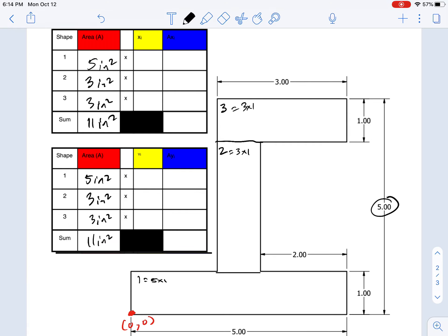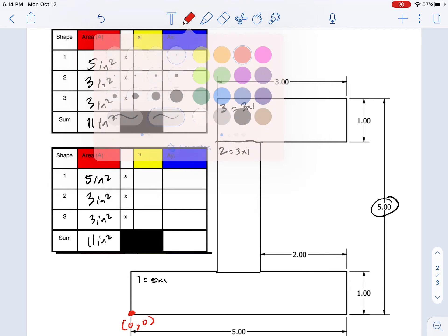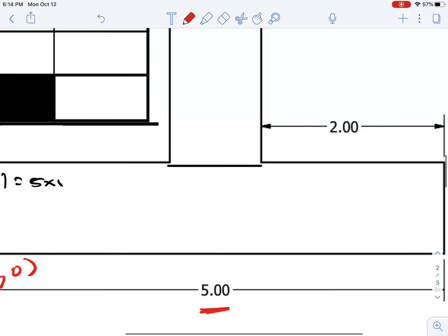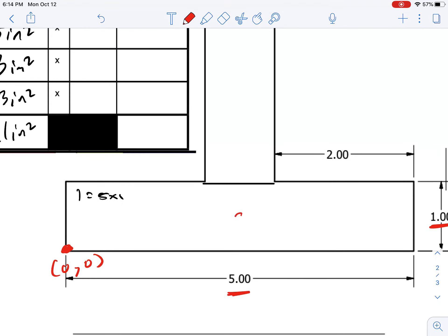Now we're going to find the centroids of each individual shape. Let's look at shape one first. It's very straightforward. Shape one, halfway across the 5 and halfway up the 1. The centroid is right here in the center of this rectangle at the point (2.5, 0.5).